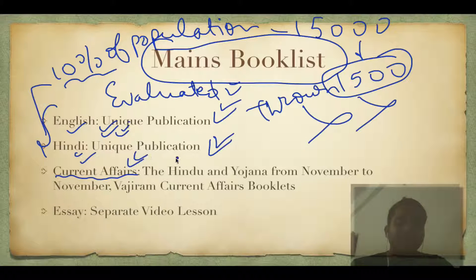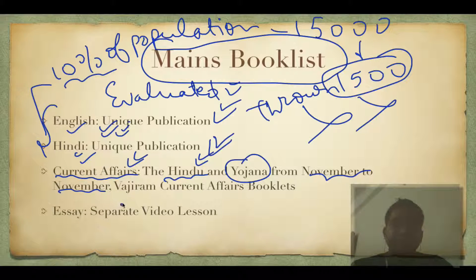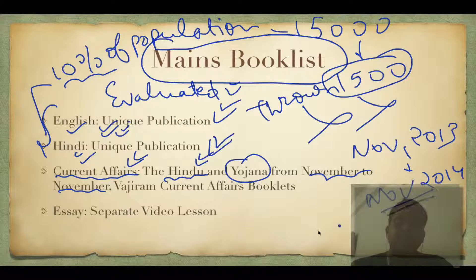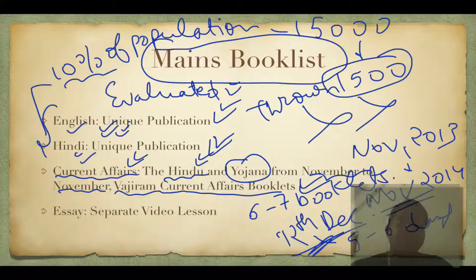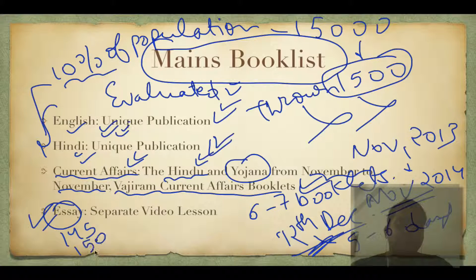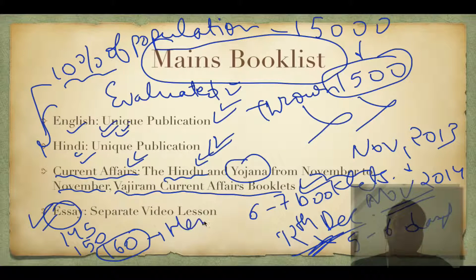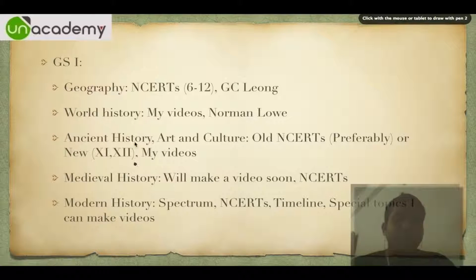For current affairs, read The Hindu and Yojana from November to November - so from November 2013 to November 2014 if appearing in December 2014, when the mains examination is on 12th December. Also read Vajiram's current affairs booklets - the last six to seven booklets. For essay, since I got 145 marks, I'll also be taking contributions from a 150-marker and a 160-marker (Hemant), and may make a separate video on essay.